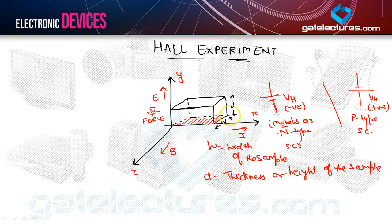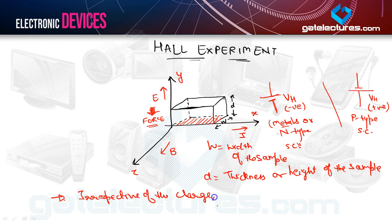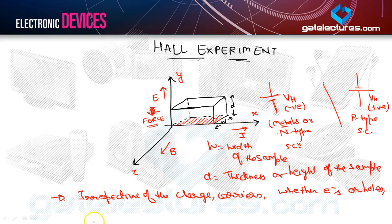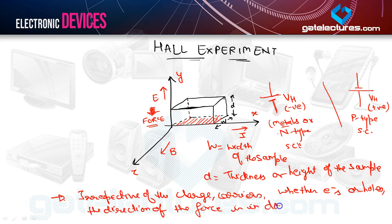Irrespective of the charge, because of the Lorentz equation, the force acting on the charge carrier is always in the downward direction for this particular setup. So we can say that irrespective of the charge carriers — whether electrons or holes — the direction of the force is in the downward direction.